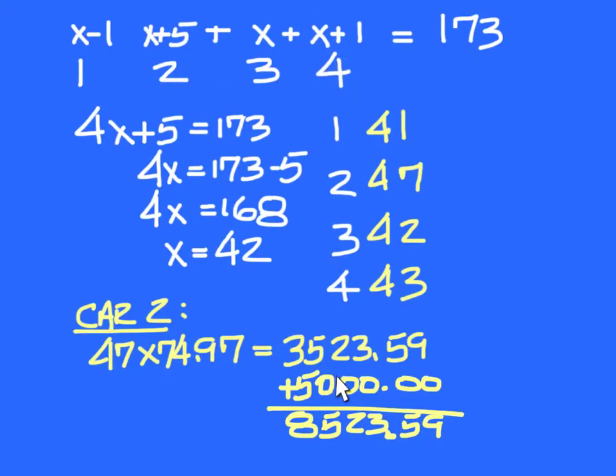And for the bonus, we only had one that qualified, and according to the wording of the problem, they get it all, all the mileage. So times 74.97 to get this, and they get 5 grand for winning. So you should have 85, 23, 59.